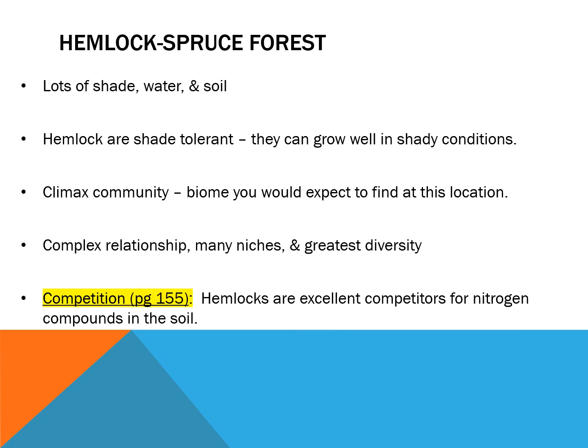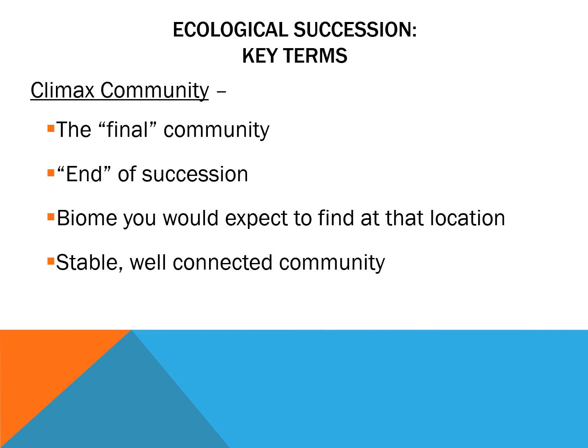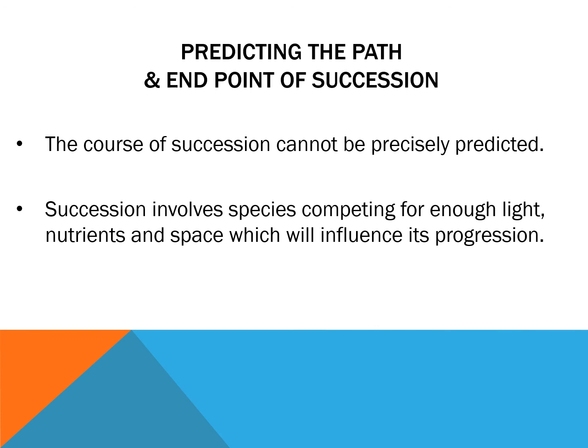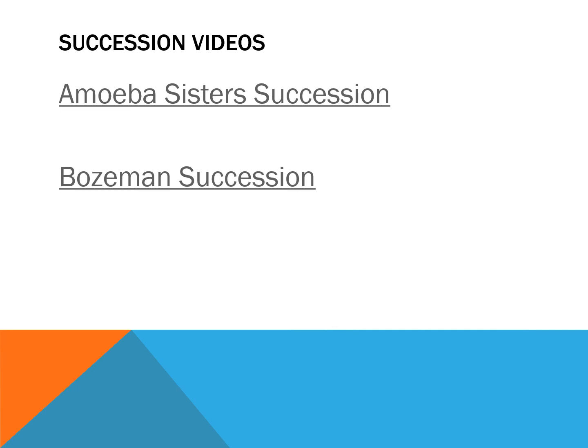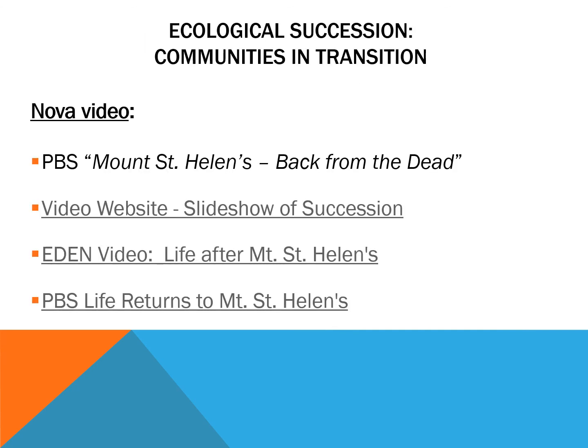This is succession: a transition from one plant community to another over time, where each community changes the environment to make it better for the next group. Like martyrs, the pioneers end up getting out-competed by the next group. There isn't necessarily a truly final community — you end up with the biome you'd expect to find at that location, which is usually very diverse and stable, though change is always occurring. There are great videos linked in the playlist for Unit 2, and if you Google 'PBS Mount St. Helens: Back from the Dead,' it covers how succession occurred in the forest around that volcano.